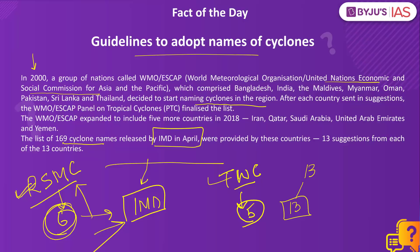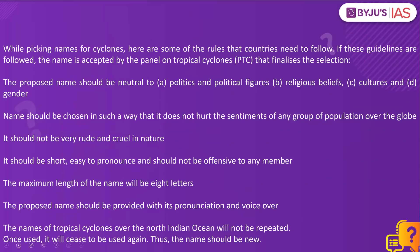Cyclones across the world are named by regional specialized meteorological centers, one of which is IMD. In April this year, 169 cyclone names were released by IMD. There are some guidelines countries must keep in mind when suggesting names. Number one: the name should be neutral — neutral to politics and political figures, neutral to religious beliefs, cultures and gender. The name should be chosen so it does not hurt the sentiments of any group of population over the globe.